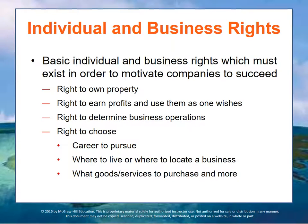This is what allows free markets to work — because people can move if they can't get what they need. They can choose to purchase things or not, which helps drive more efficient pricing. This is how resources get distributed efficiently in society. Businesses must also have the right to choose where to locate, what goods and services to produce, and what resources to use in the production process.